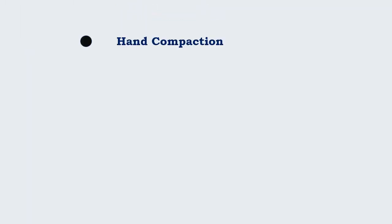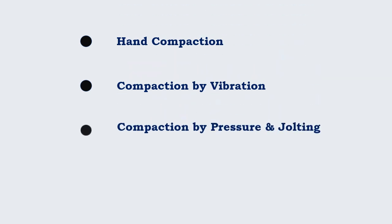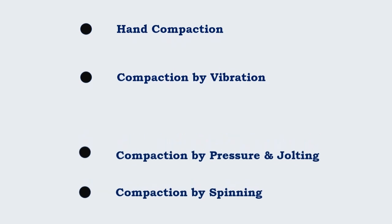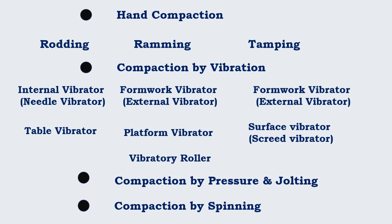There are various methods of compaction employed at the site. Namely, hand compaction, compaction by vibration, compaction by pressure and jolting, and compaction by spinning. There are different sub-methods available in each of these methods. Each will be explained one by one in future videos.